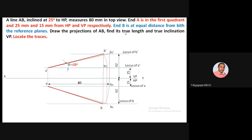The true inclination with VP is asked. Using a scale, measure the true length of line A-dash B1-dash or A to B2 — it measures 88 mm. Use a protractor to measure the inclination of line AB2 with respect to the locus of B. Phi equals the angle between AB2 and the locus, giving the true inclination with VP.